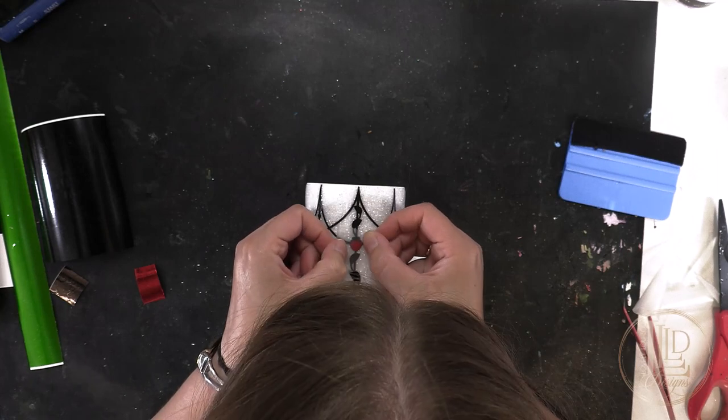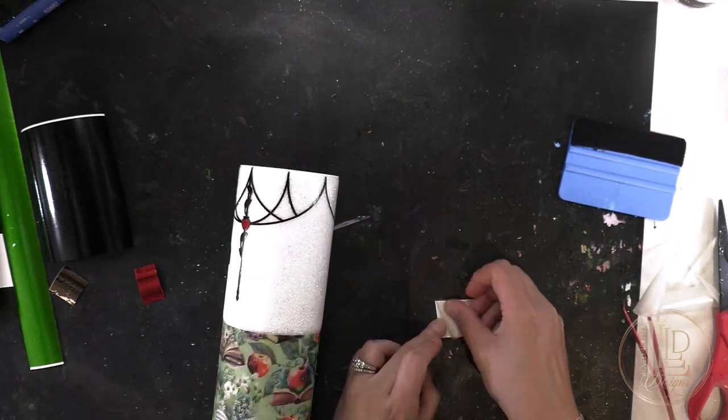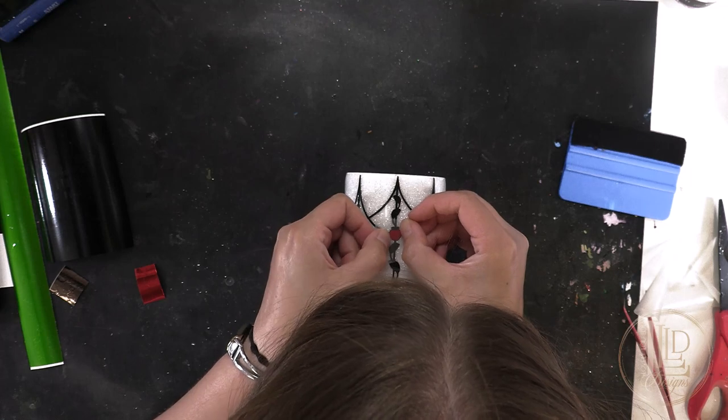To add the color layer details, I use small pieces of transfer tape to pick up the pieces and place them one by one directly on the tumbler.